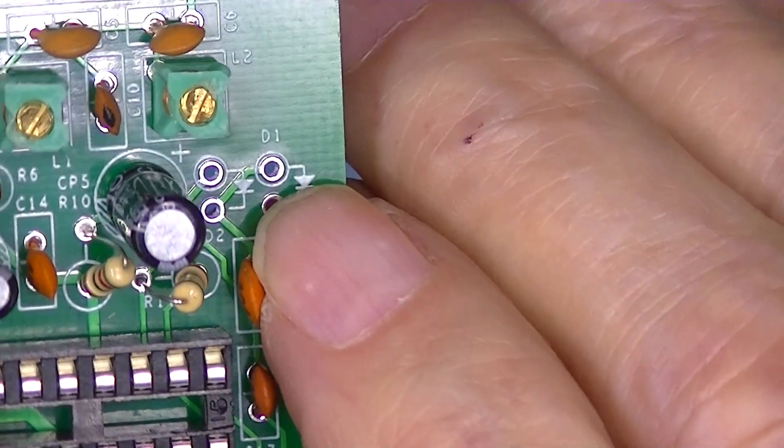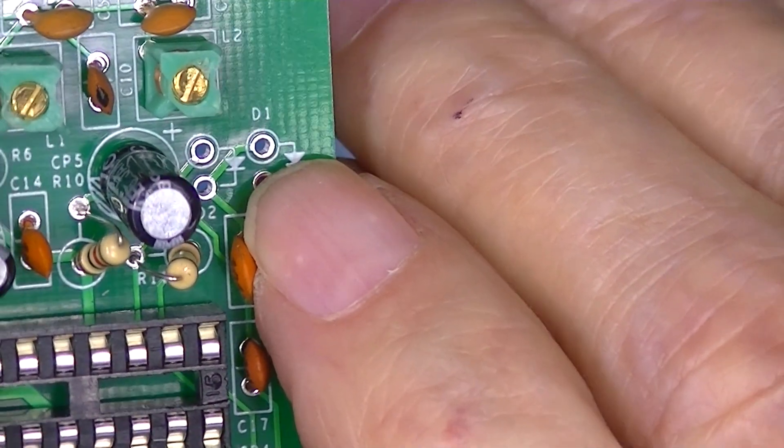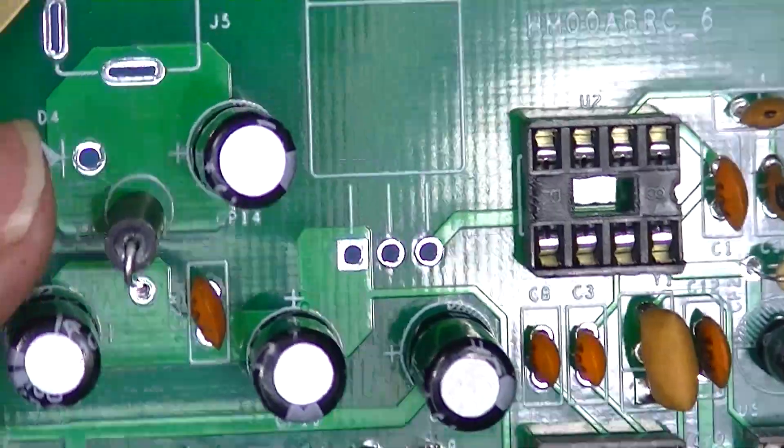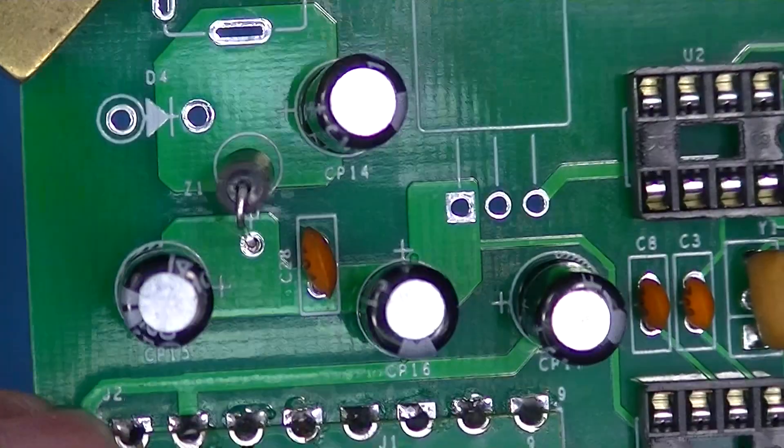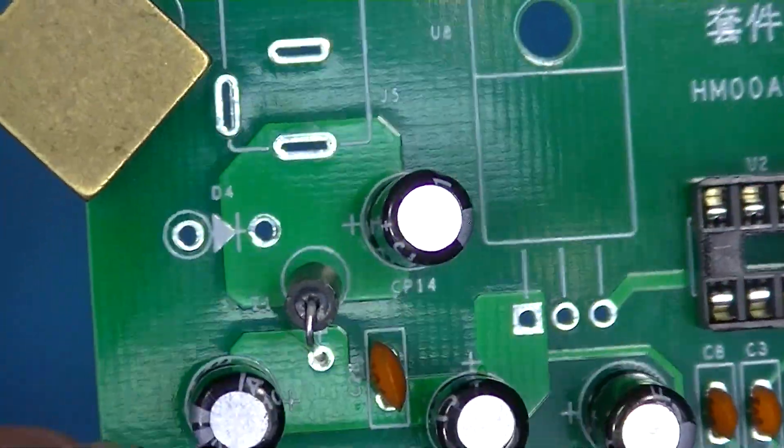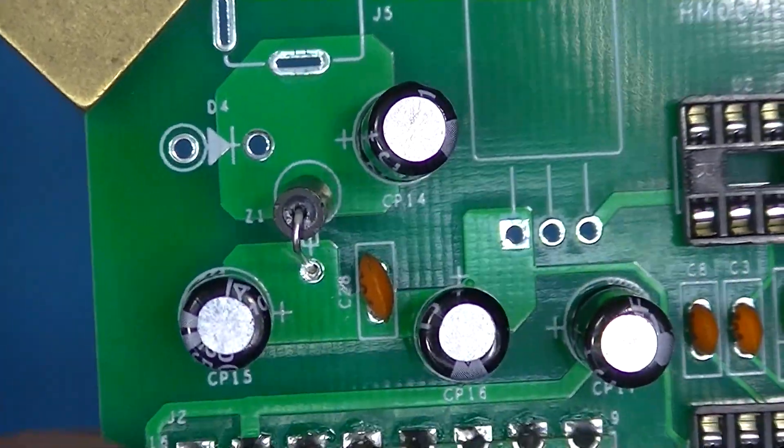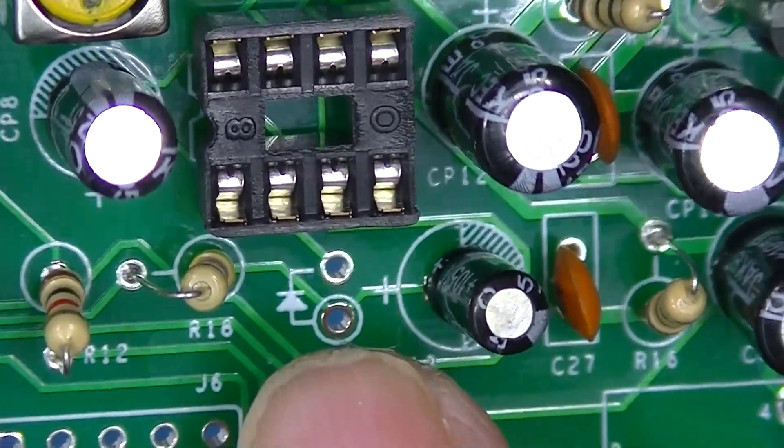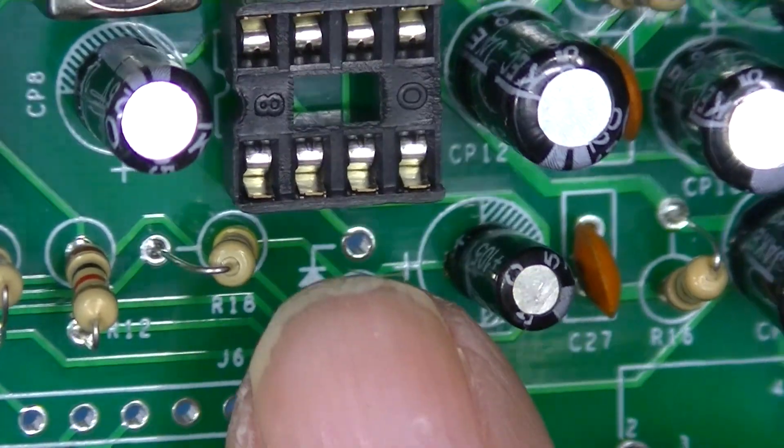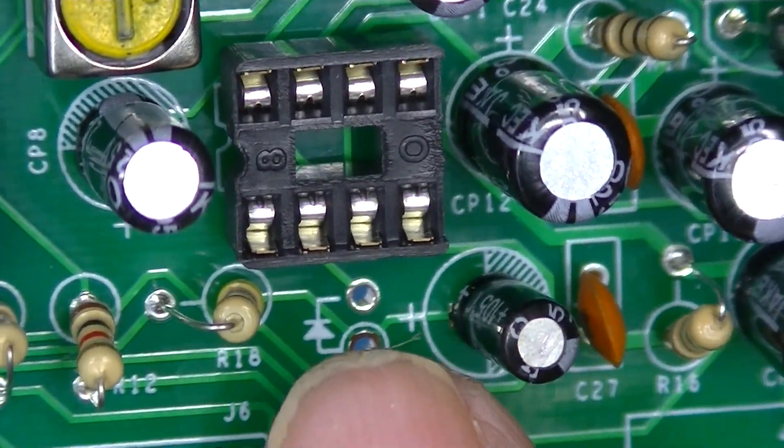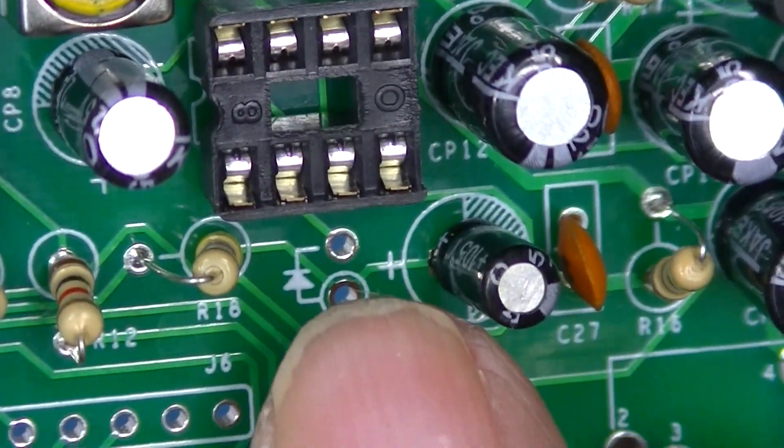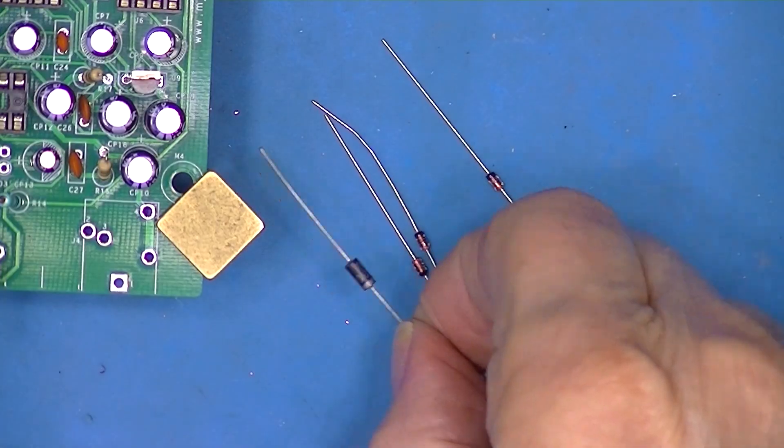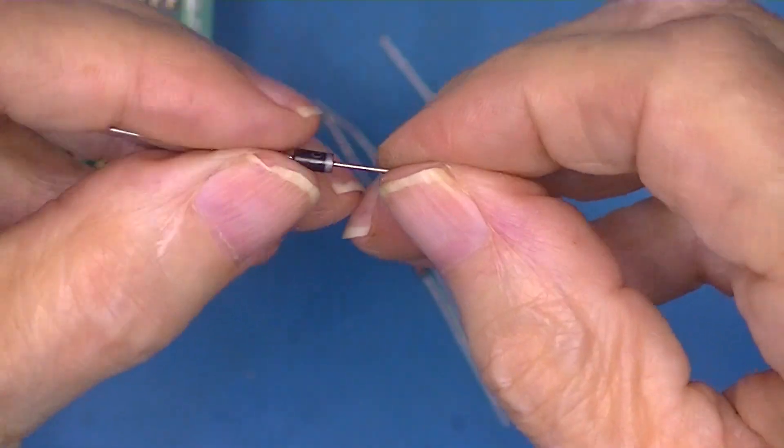Now these diodes, all four of them, are installed hairpin. And it looks like the marked end of the diode goes to the top. Here's the other small signal diode, D3, and again the line would go onto the top of the hairpin.